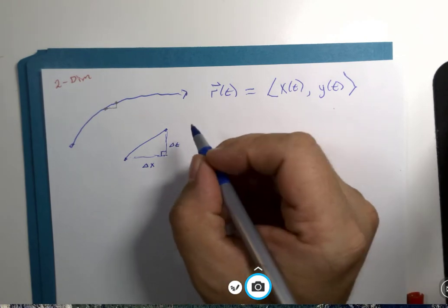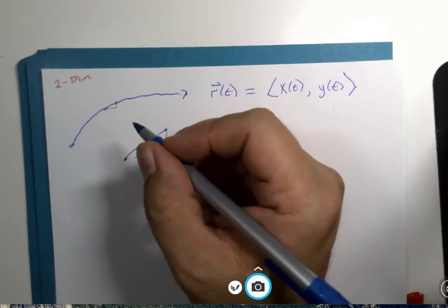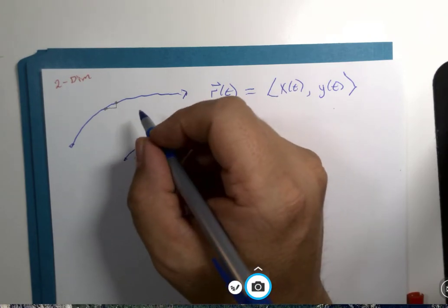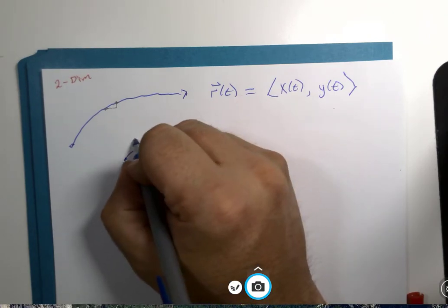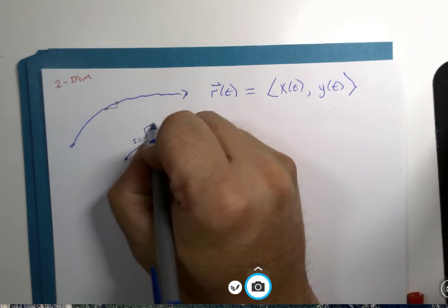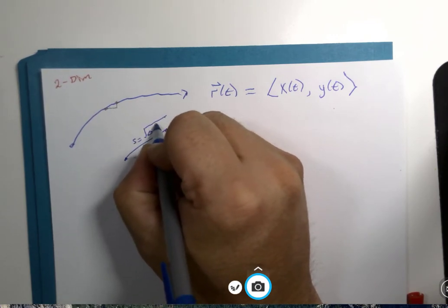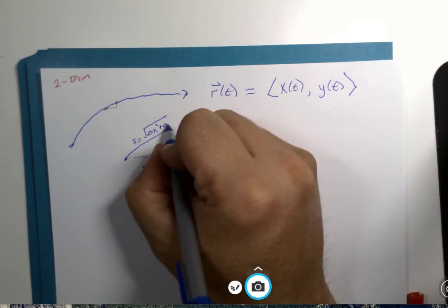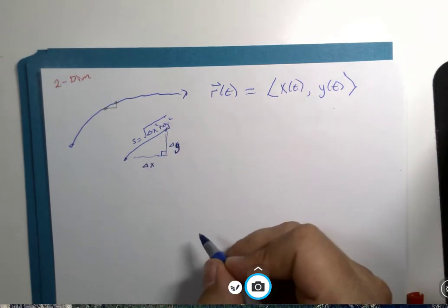So, let's call this delta x, and let's call this delta t, and the length here, you could call it s, which is the square root of delta x squared plus delta, oops, let's call this y, shall we, y squared. A little Pythagorean's Theorem.